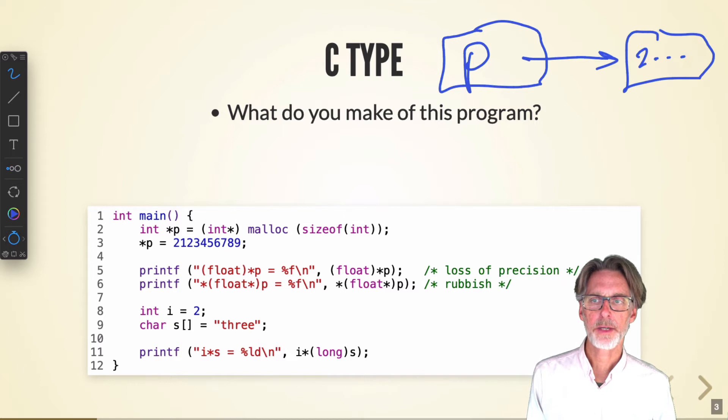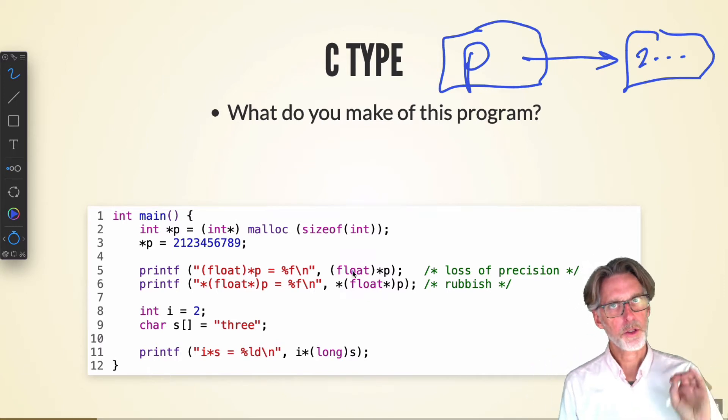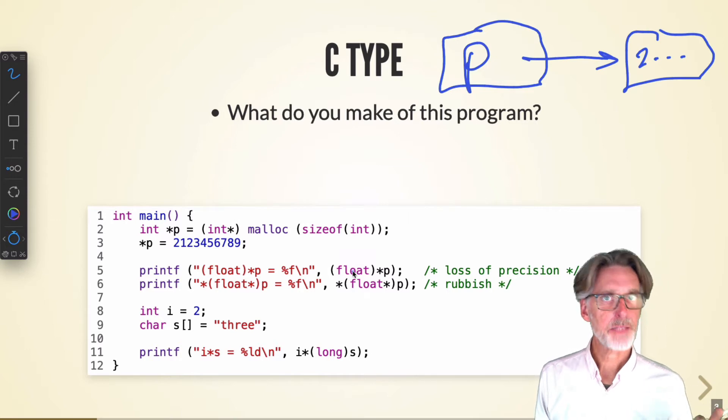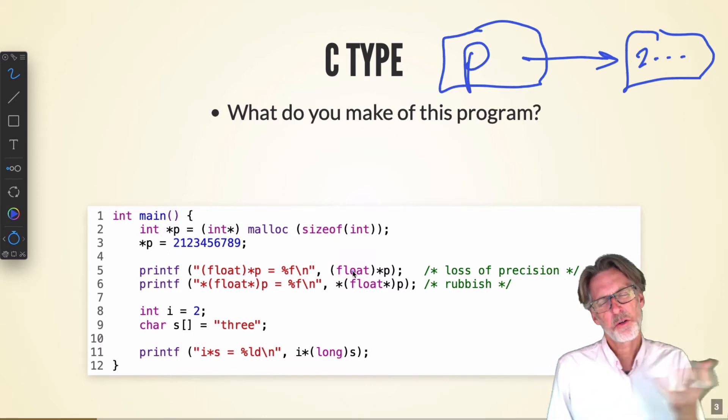And what's then happening on line five is that we're going to print out the value that we stored. Star P dereferences P, that'll give me the value two billion. And now I'm going to convert that to a float. If you remember from your systems class, 32-bit floating point numbers have less precision than integers. So the number that I get out here may have a little loss of precision. But that's not a total disaster.